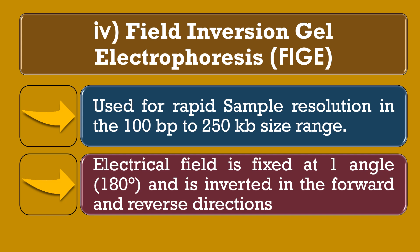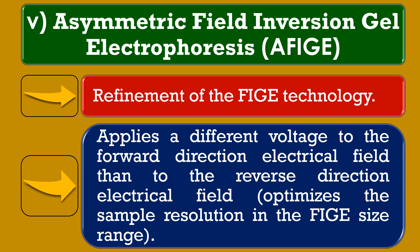The final and fifth type is Asymmetric Field Inversion Gel Electrophoresis, or AFIGE. This is a further refinement of the Field Inversion Gel Electrophoresis technology. AFIGE applies a different voltage to the forward direction electrical field than to the reverse directional electrical field, which optimizes the sample resolution in the FIGE size range.